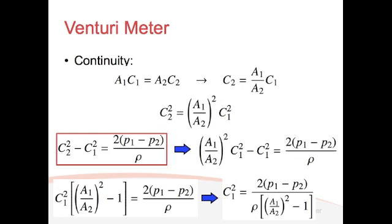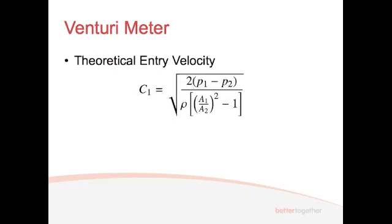C₁² equals 2 times the pressure difference divided by the density multiplied by A₁ over A₂ squared minus 1. Now, obviously, to get the velocity, we need to square root that. And so we can square root that. And that will give us what's known as the theoretical entry velocity. We'll cover why we call it the theoretical velocity in a second.